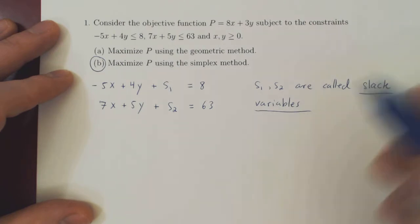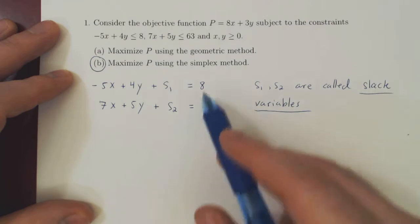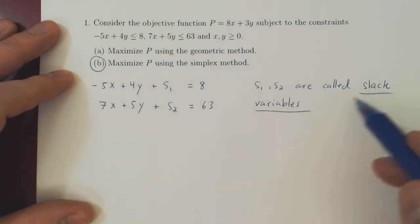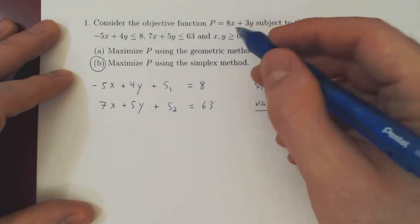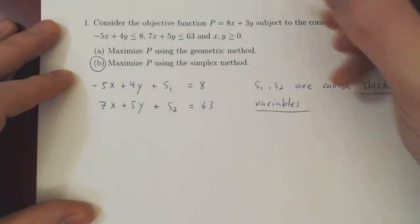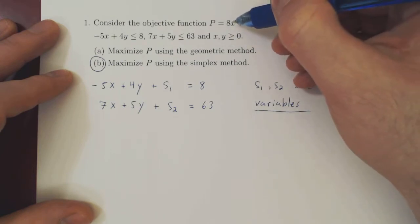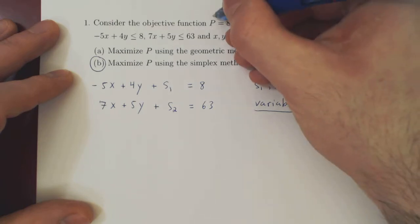Okay. So this is the first step, how to transform the inequalities into equalities by adding so-called slack variables. We want to rearrange then, this is step two, the objective function. We always leave P where it is and we subtract everything else to the other side.